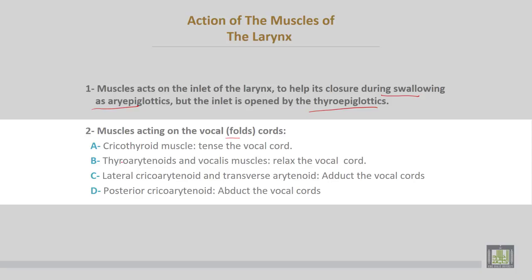The muscles acting on the vocal cords or vocal folds: the cricothyroid muscle tenses the vocal cords. The thyroarytenoids and the vocalis muscles relax the vocal cords. The lateral cricoarytenoid and transverse arytenoid muscles adduct the vocal cords.